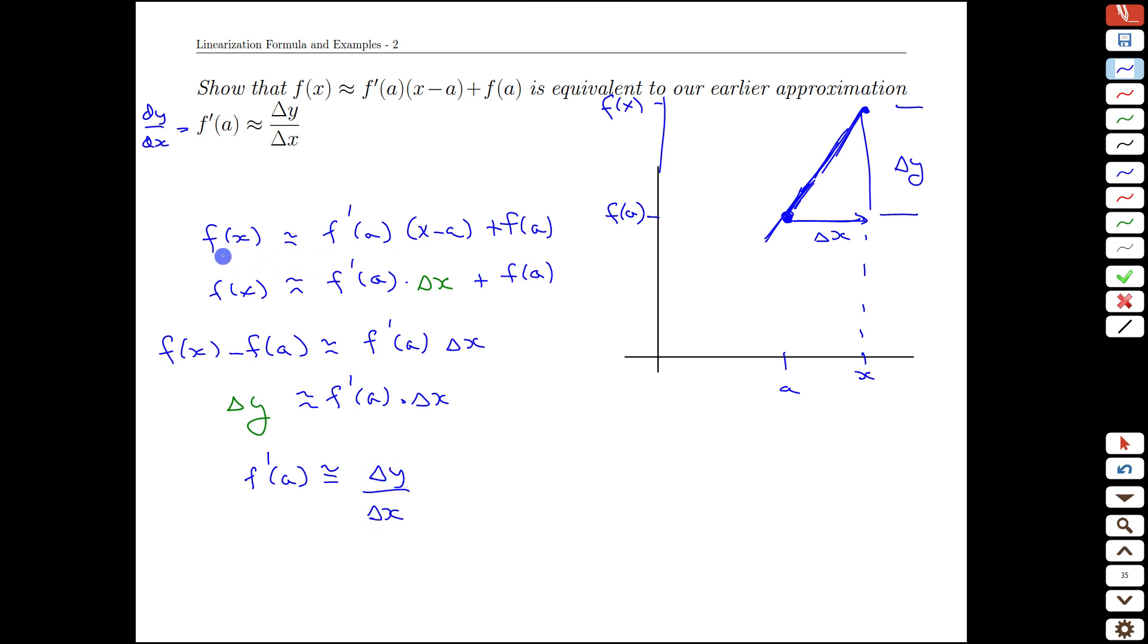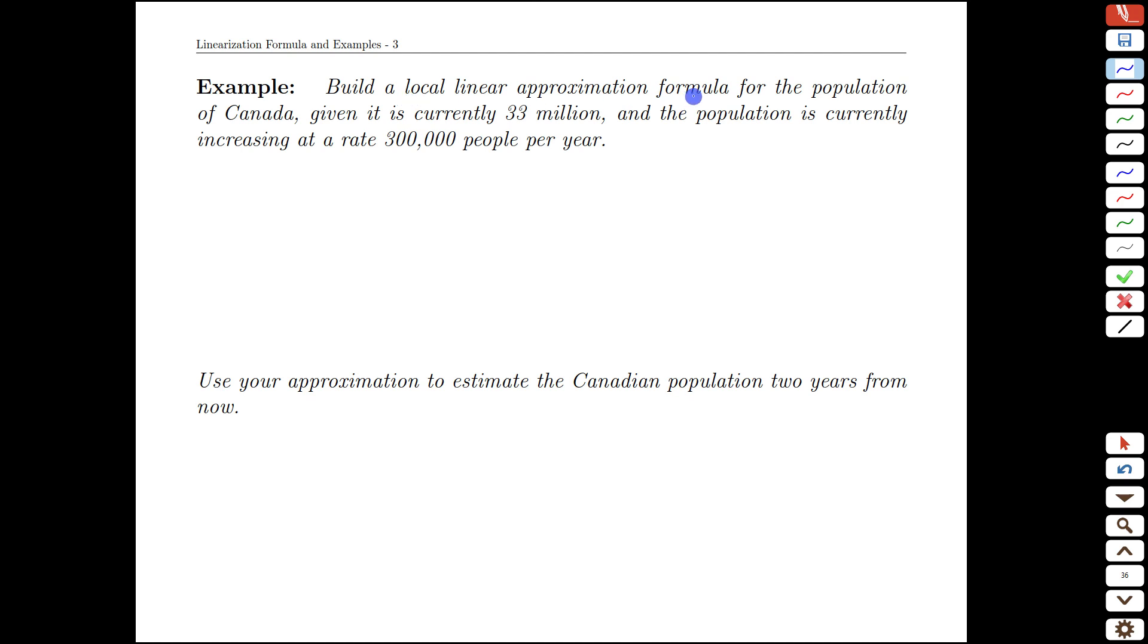That formula, if we work backwards and just decompose these changes in x and changes in y, give us the exactly equivalent straight line approximation formula that is more easily thought of as basing ourselves at a point and with a slope. But they're the same formula under the hood. You can memorize one and transform, you can memorize both, as long as you recognize that they really are the same thing.